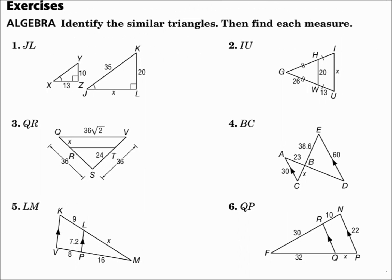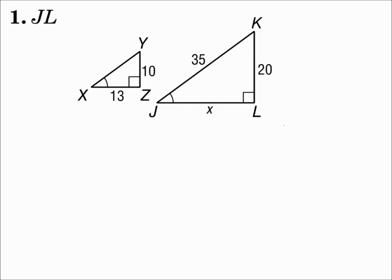Similar triangles can also be used to find measurements. Set up proportions and you can solve for missing values. Number one: find the measure of segment JL. I need to match up corresponding sides to make a proportion. 13 on the left is between one arc angle and the right angle.